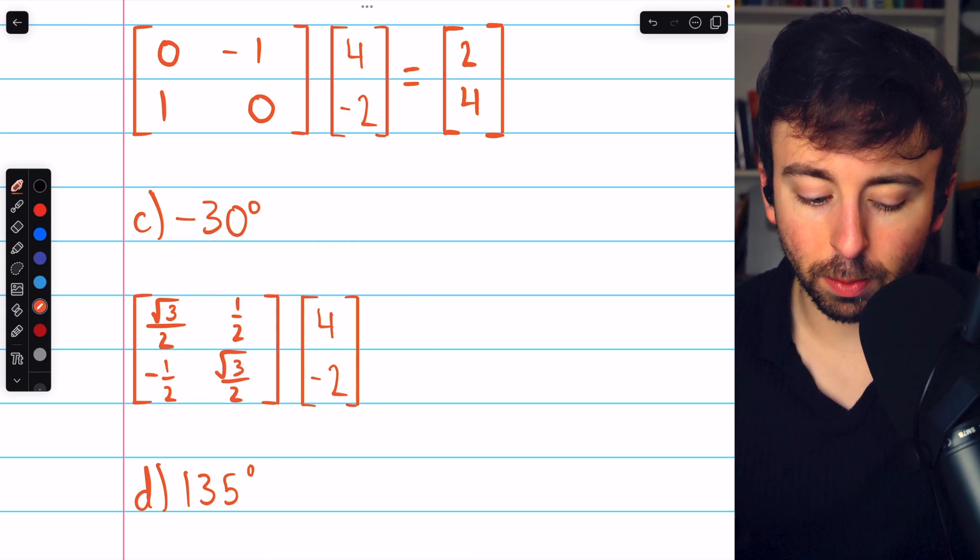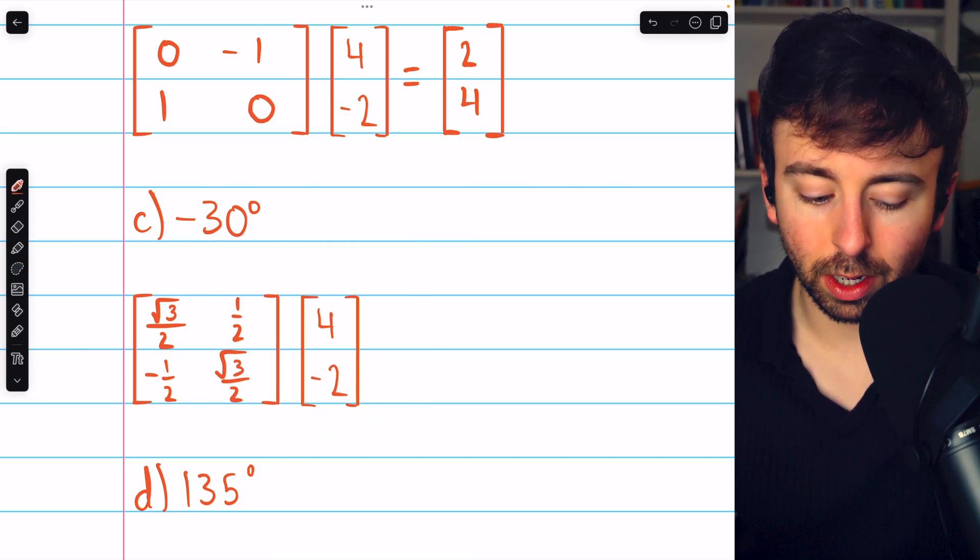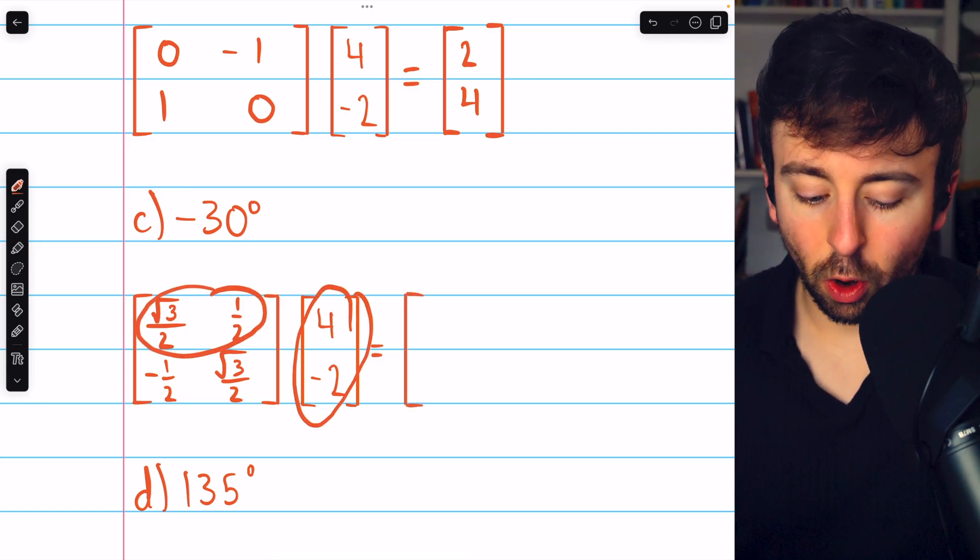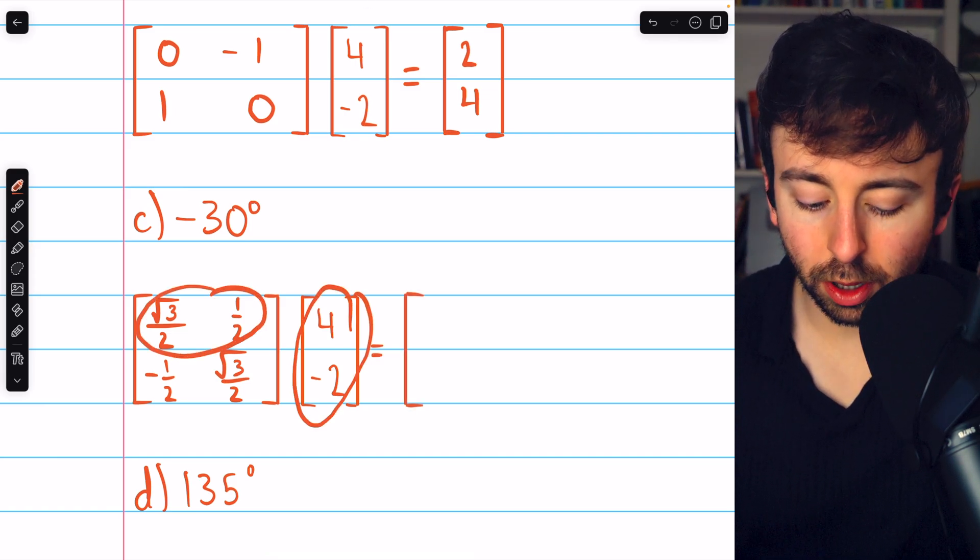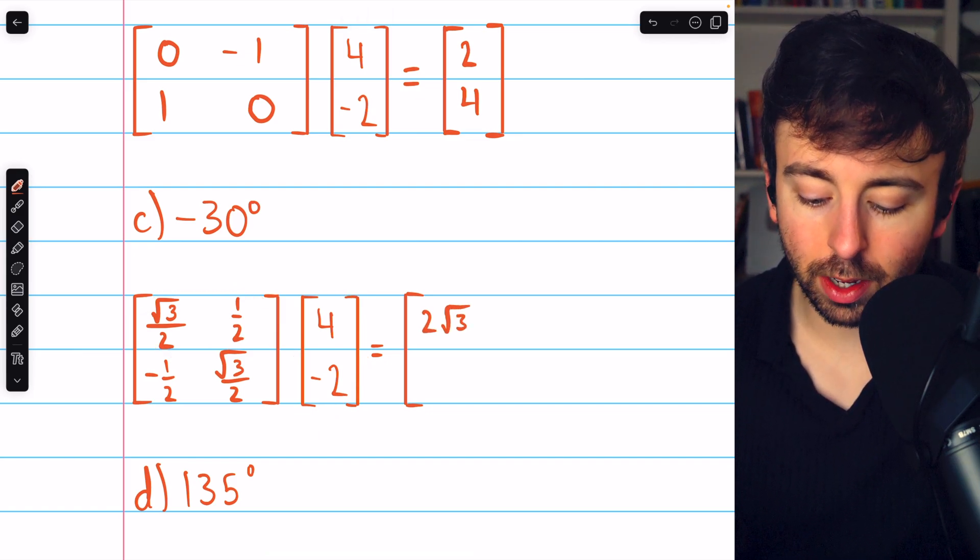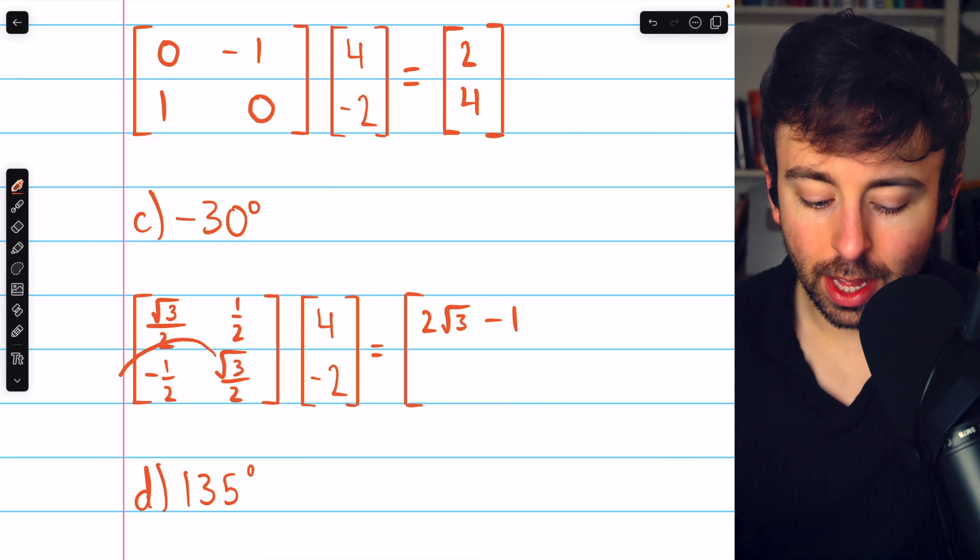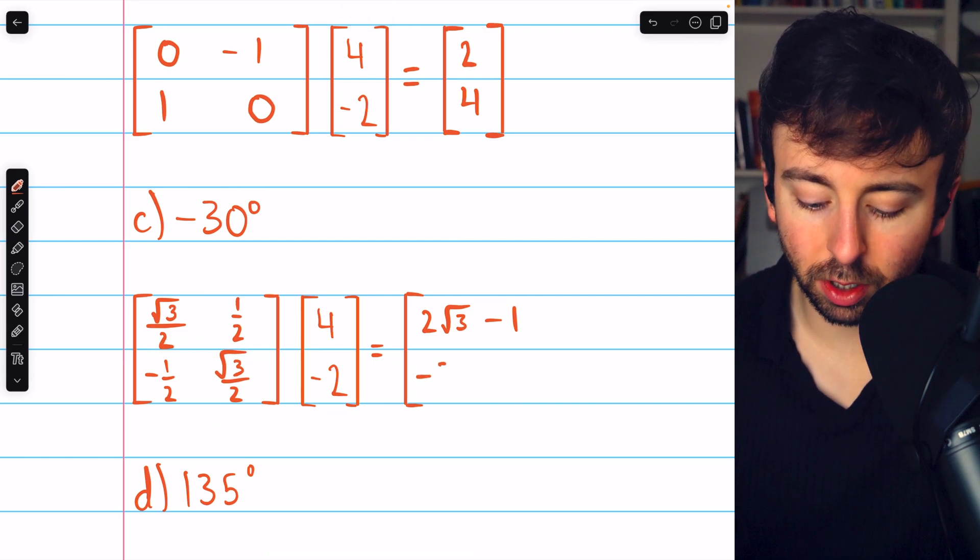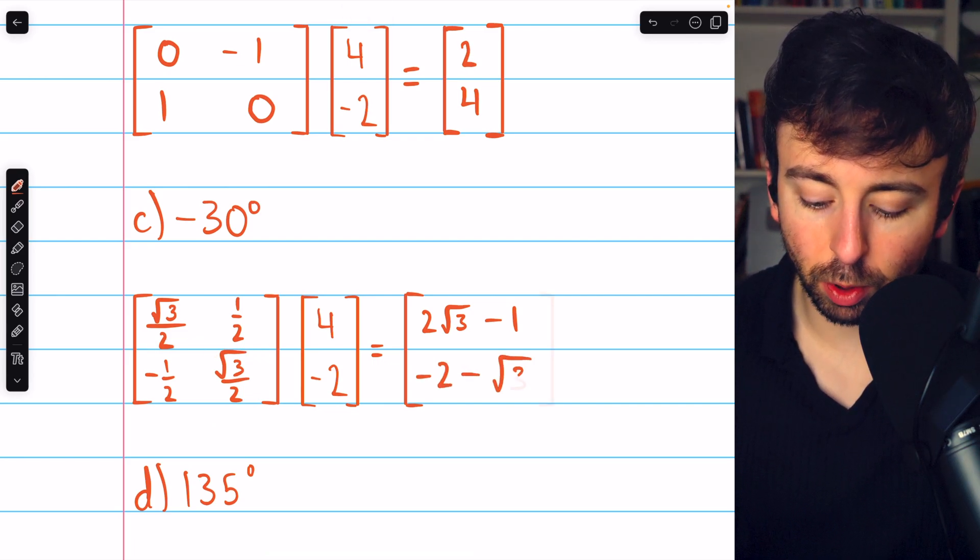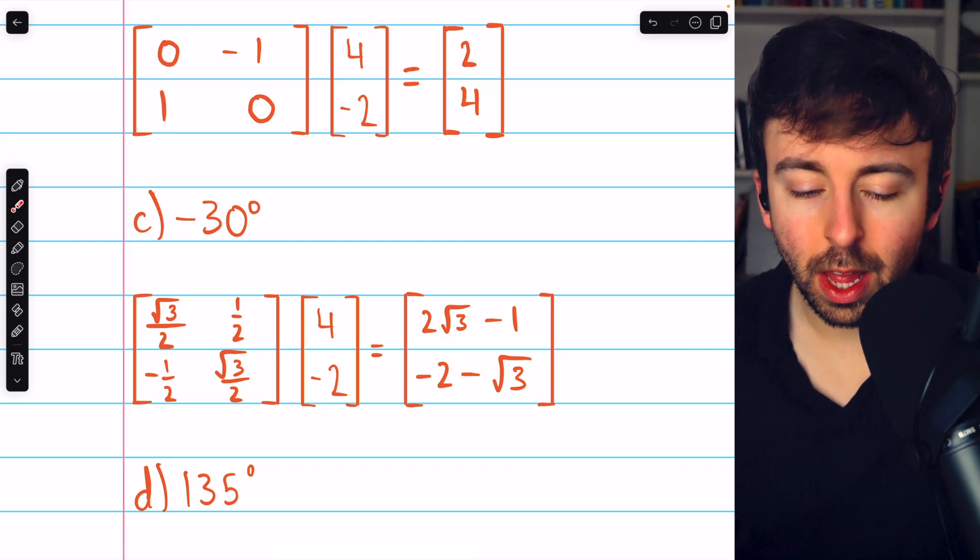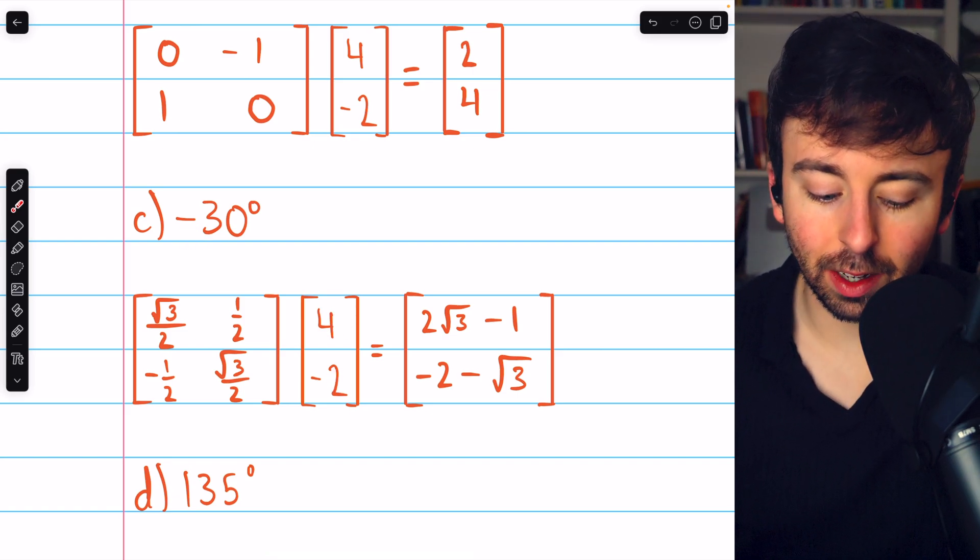Let's do the matrix multiplication to carry out this transformation. First, this row gets matched up with this column, producing 2√3 - 1. Can't simplify that. Then this row and this column gives -2 - √3. This vector is the image of (4, -2) after it is rotated negative 30 degrees.